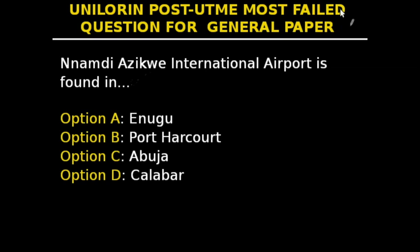Nnamdi Azikiwe International Airport is an international airport serving Abuja in the Federal Capital Territory of Nigeria. It is the main airport serving the Nigerian capital city, and was named after Nigeria's first president, Nnamdi Azikiwe. So the answer to this question is option C, which is Abuja.